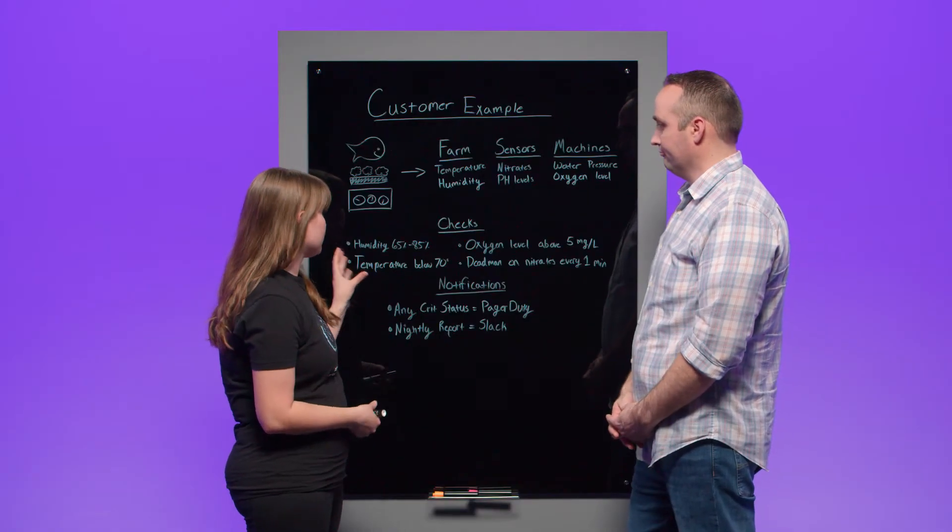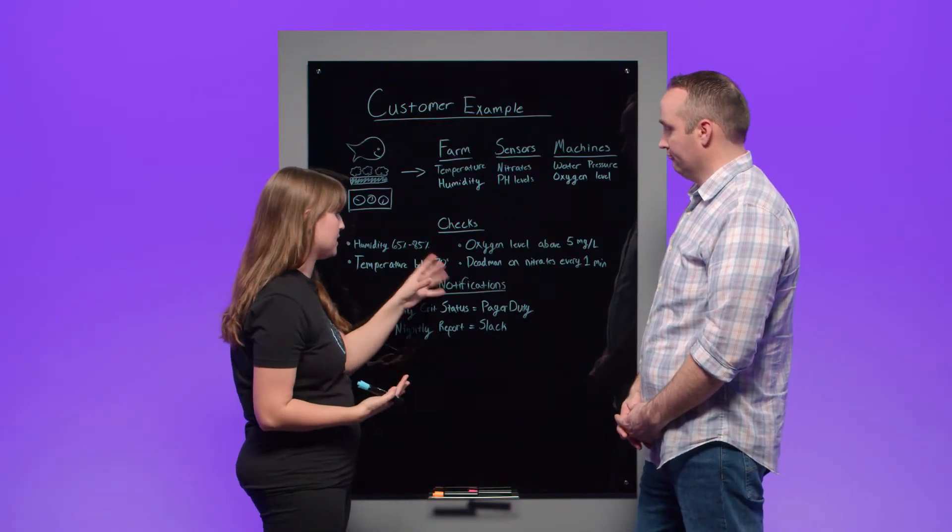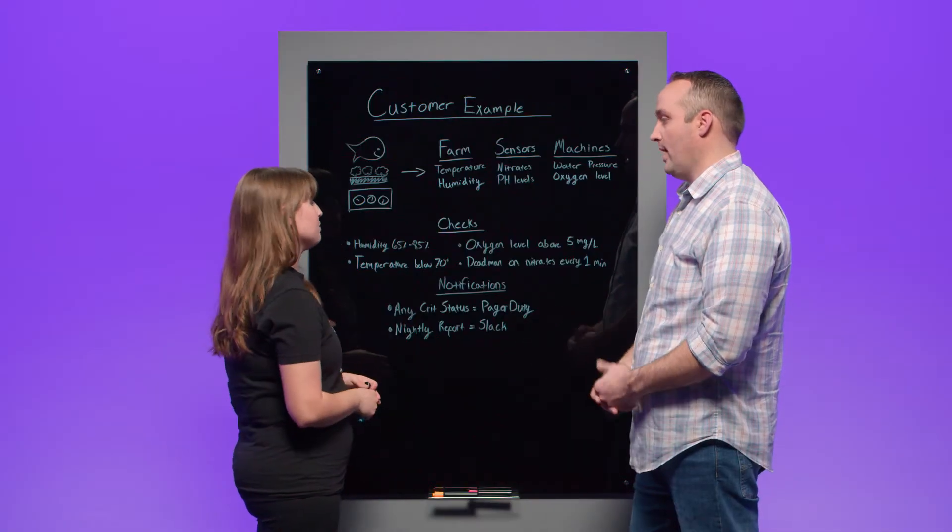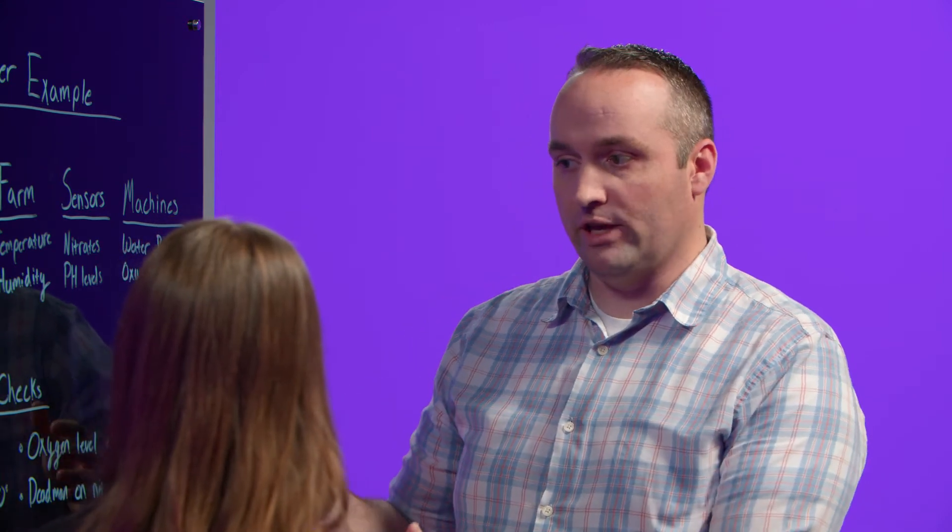And then they specifically have a dead man check that runs every minute on the nitrates. They actually have dead man checks on almost all of their sensors, but this one is the one that runs the most often because if the nitrates really get out of whack, it can be very dangerous for the overall health of the fish and lettuce. And the dead man check just ensures that data is being reported. That's correct.